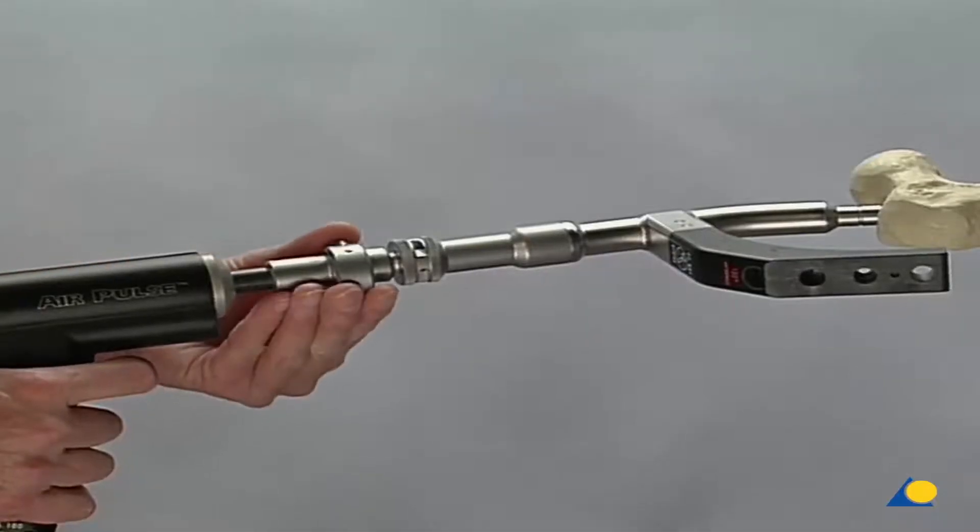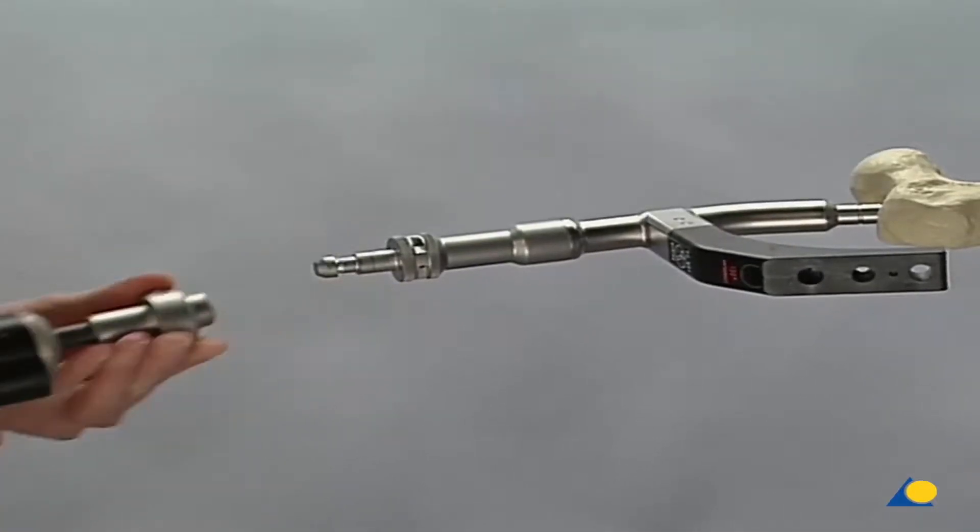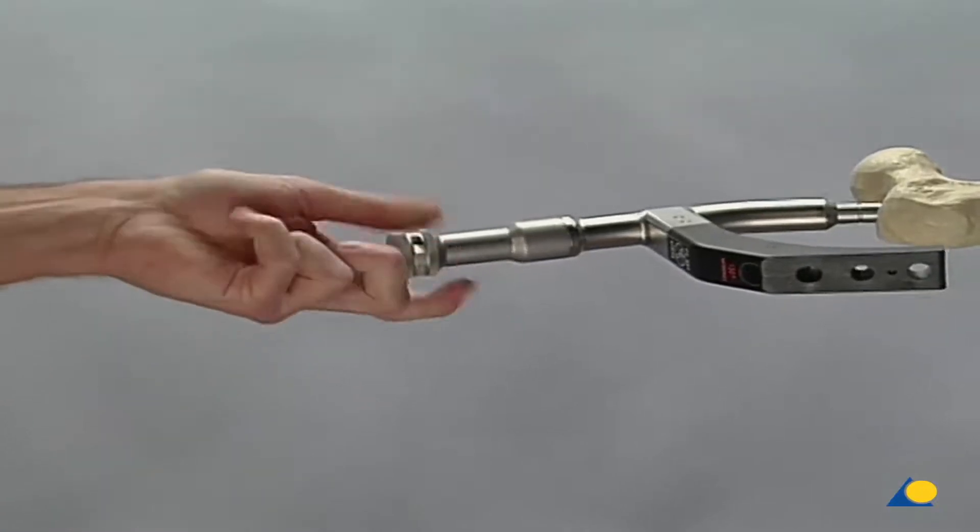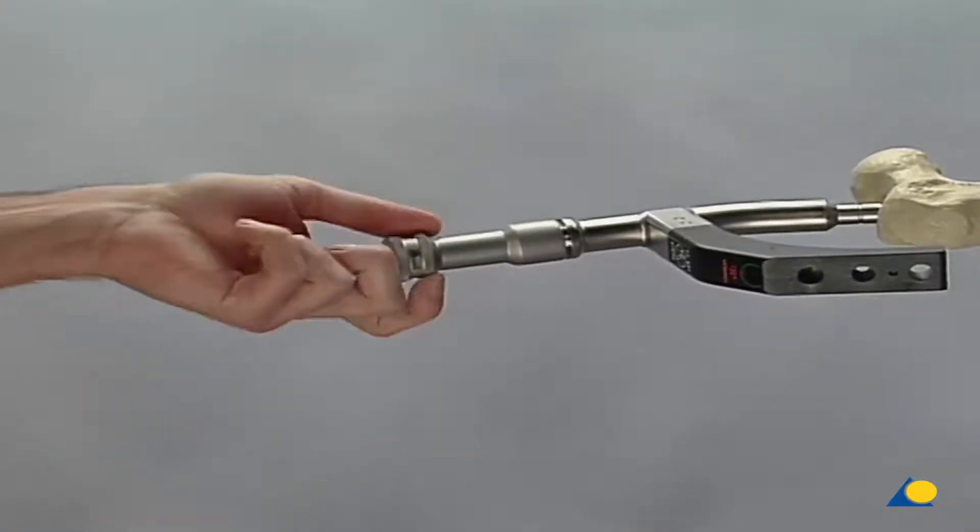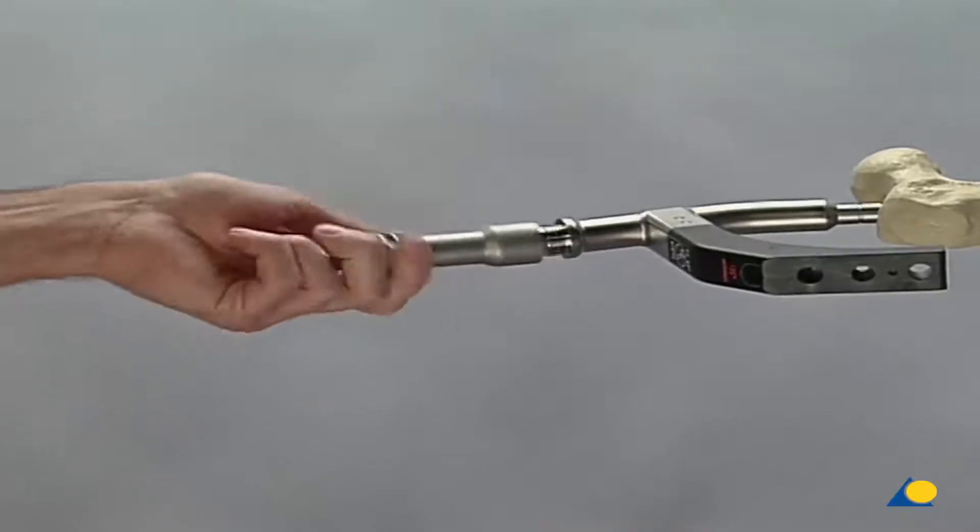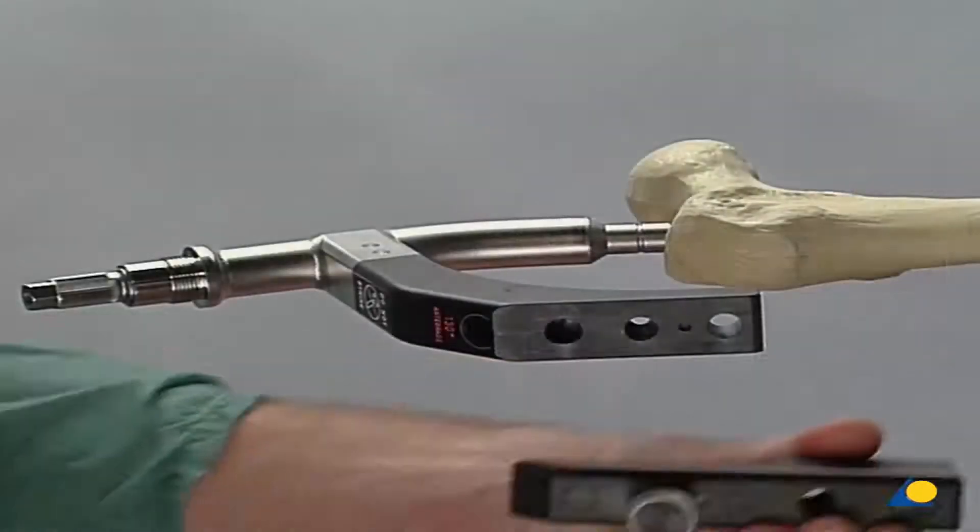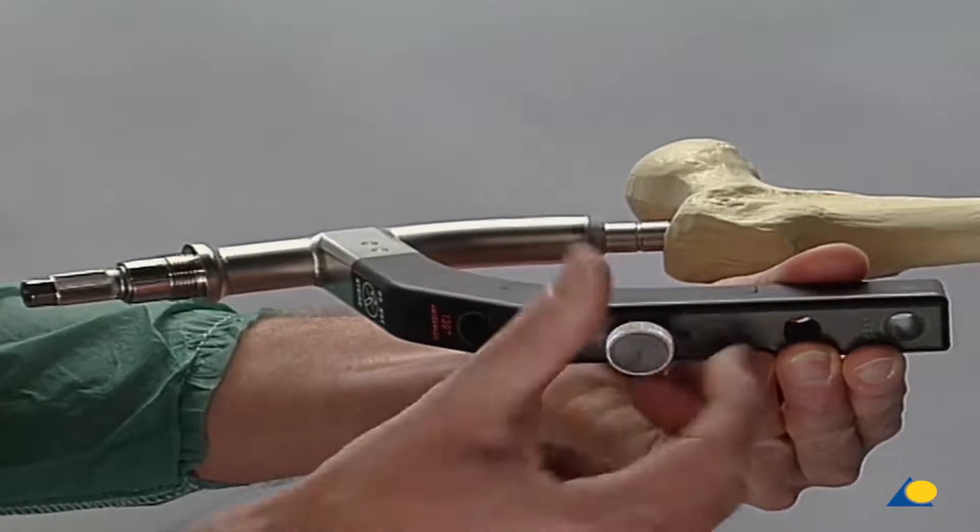The air pulse and the driving cap are removed. The aiming arm for proximal locking is screwed on.